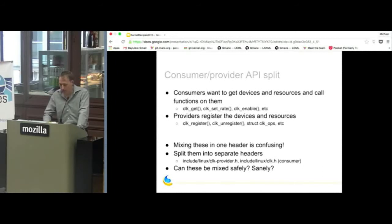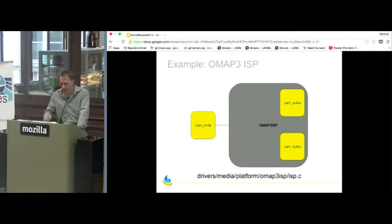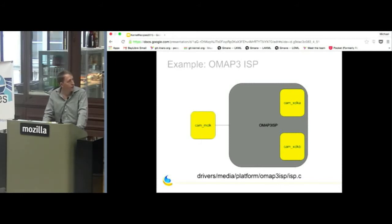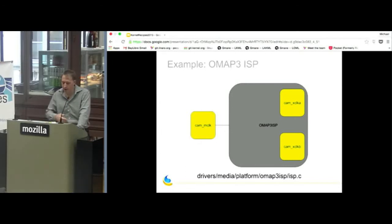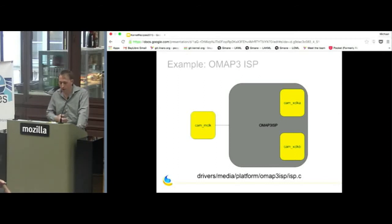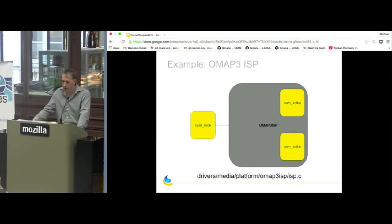An important question is whether providers and consumers can be mixed safely. Here's a real-life example: an image signal processor driver which is merged upstream. The ISP block consumes a clock — the CAM_M clock provided by a clock generation IP block. But interestingly, the ISP block also has its own clock knobs which it exposes as a provider. So a single driver can be both a provider and a consumer, and the framework must handle this without falling over.